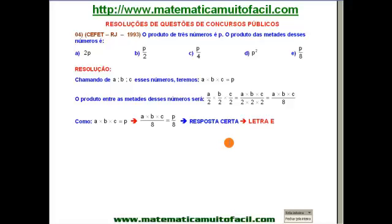Diz assim a questão, é uma questão bastante simples. O produto de 3 números é P, o produto das metades desses números é... 5 itens, vamos verificar qual deles será o verdadeiro. Vamos resolver?